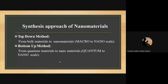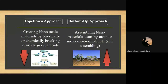For making or preparing any nanomaterial, there are two methods: the top-down method and the bottom-up method. In the top-down method, nanomaterials are created from bulk materials — from macroscale to nanoscale. In the bottom-up method, nanomaterials are created from quantum-level materials — from quantum scale to nanoscale. In the top-down approach, a nanoscale material is created by physically or chemically breaking down bulk material properties.